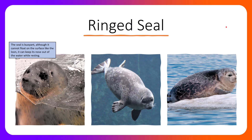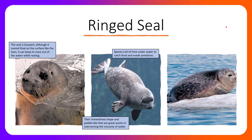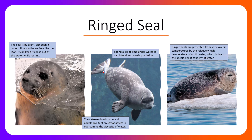The ringed seal in many ways is very similar to the loon. The seal is buoyant — although it cannot float on the surface like the loon, it can keep its nose out of the water relatively easily, allowing the seal to rest while breathing without expending a lot of energy. These seals spend a lot of time underwater to catch food and evade predation. They have a streamlined shape and paddle-like feet that are great assets in overcoming the viscosity of water, because it is harder to move in water than on land. These organisms have acquired adaptations like large paddle feet or webbed feet that allow them to move through the viscous medium very easily.